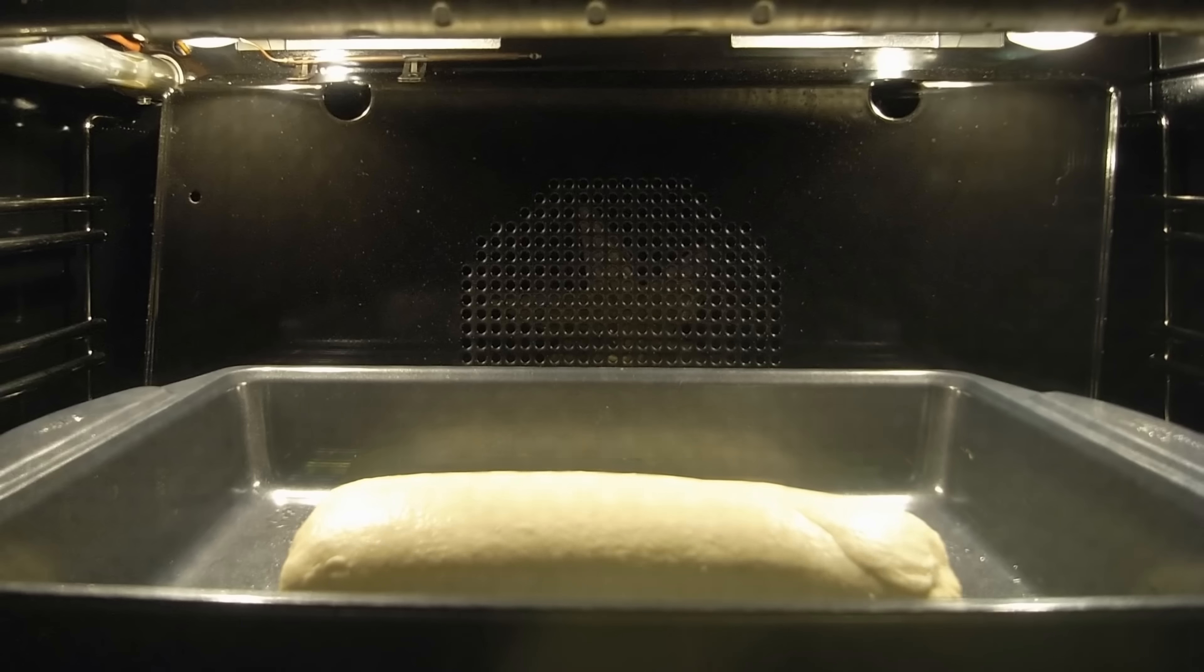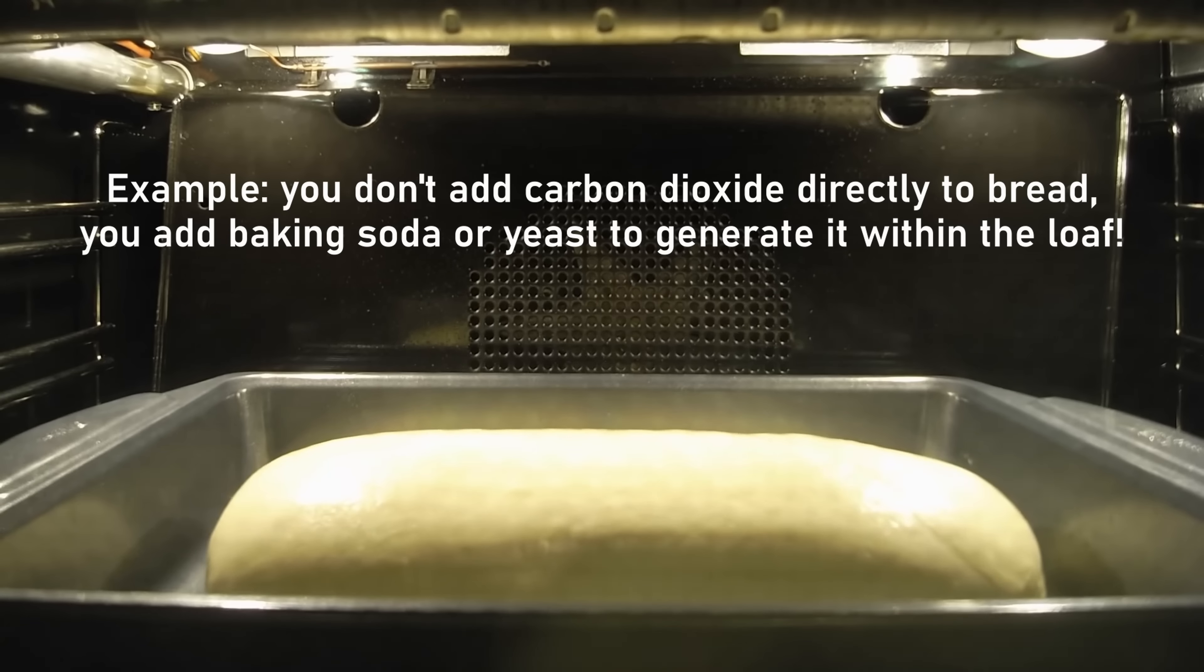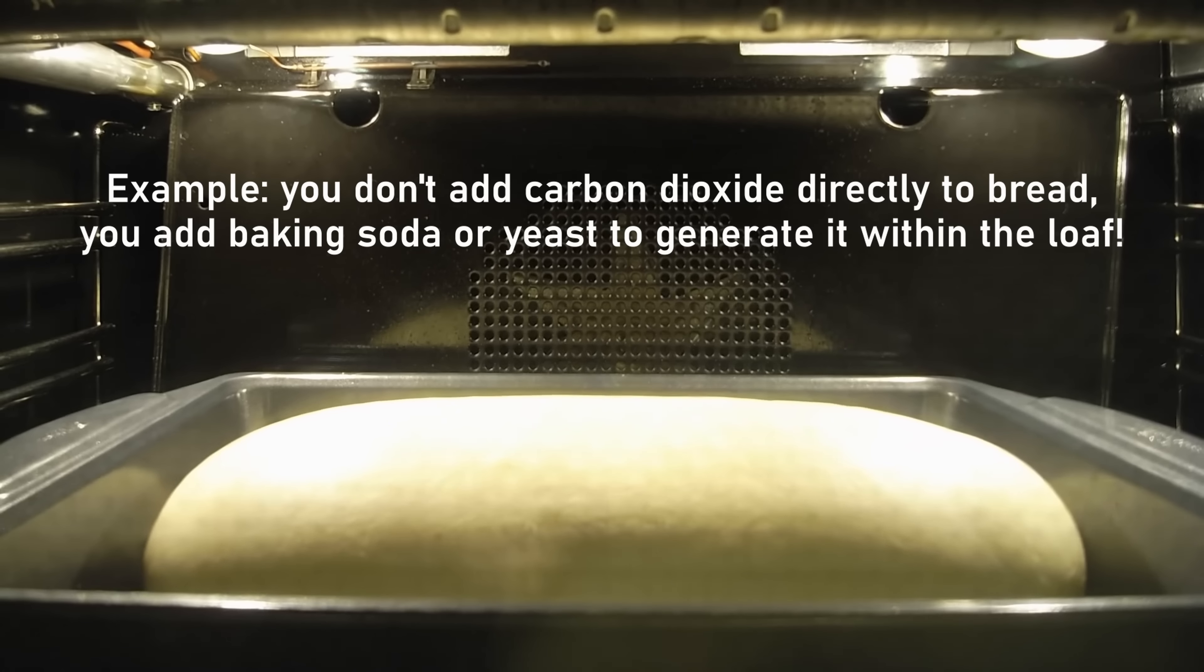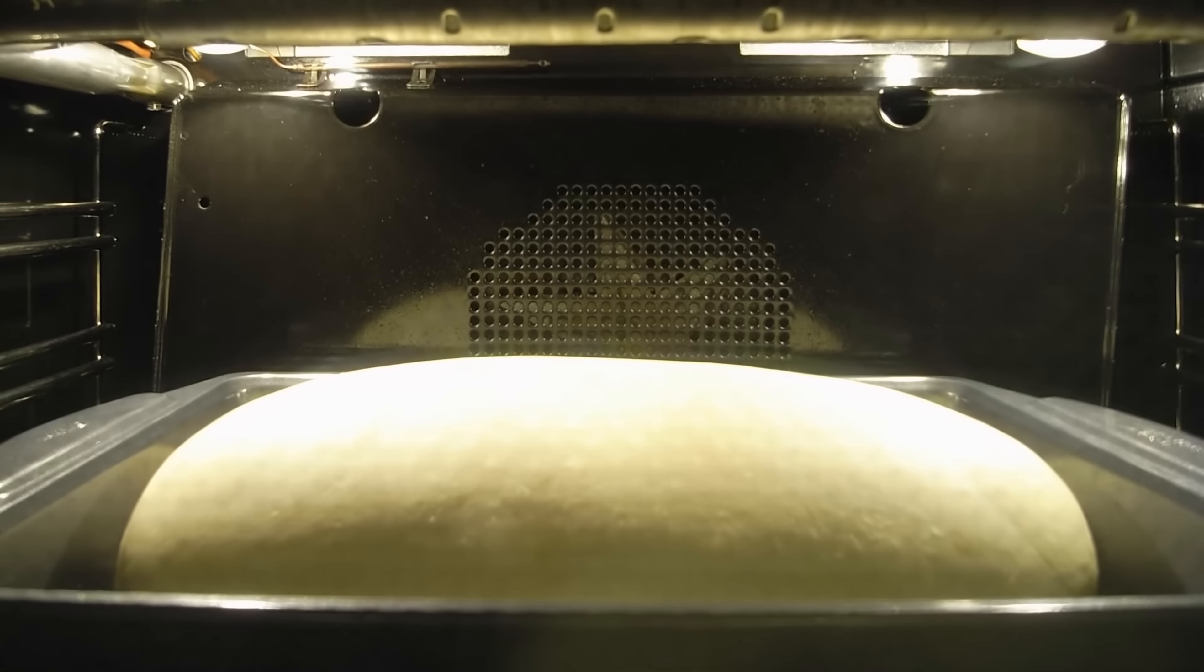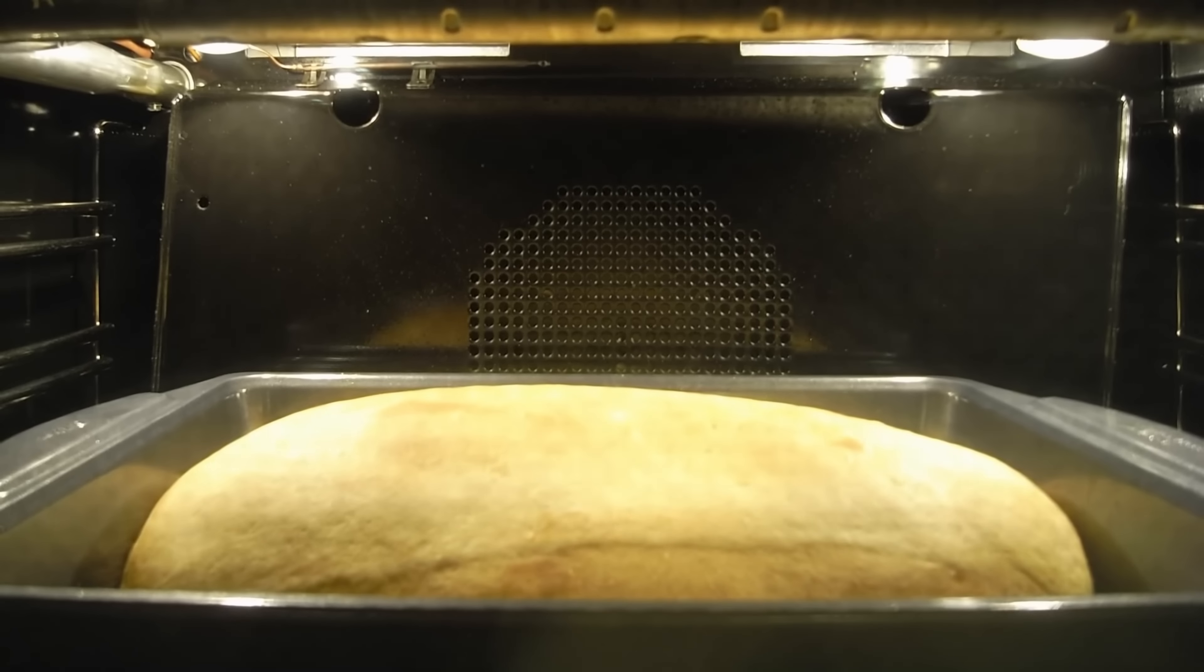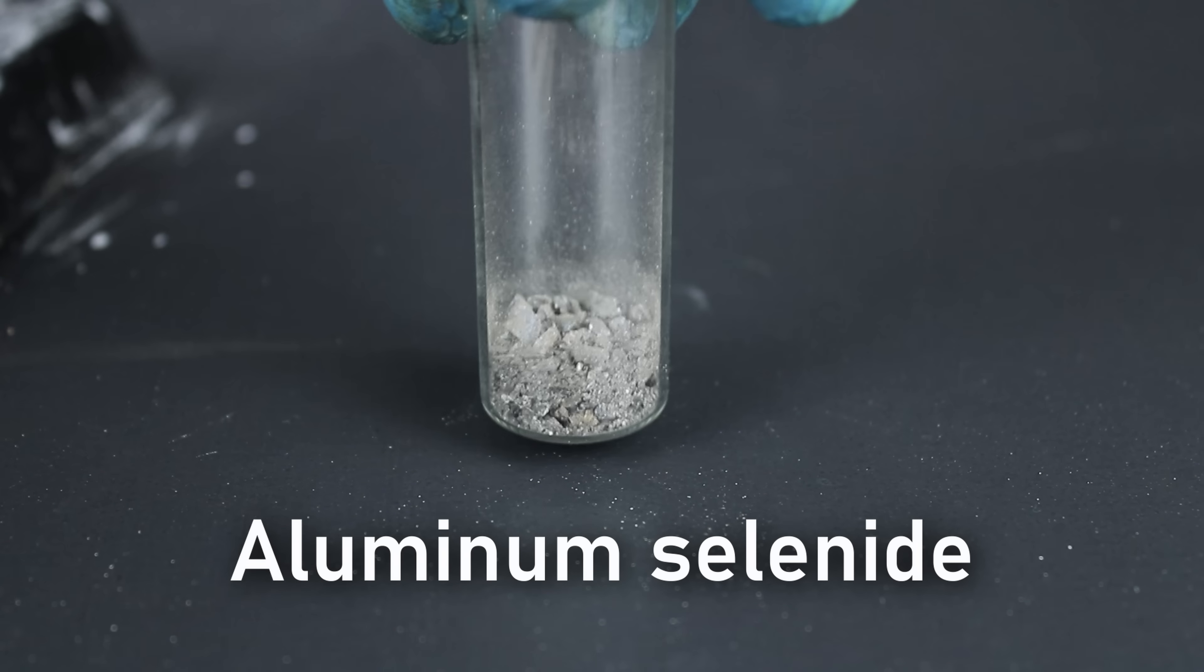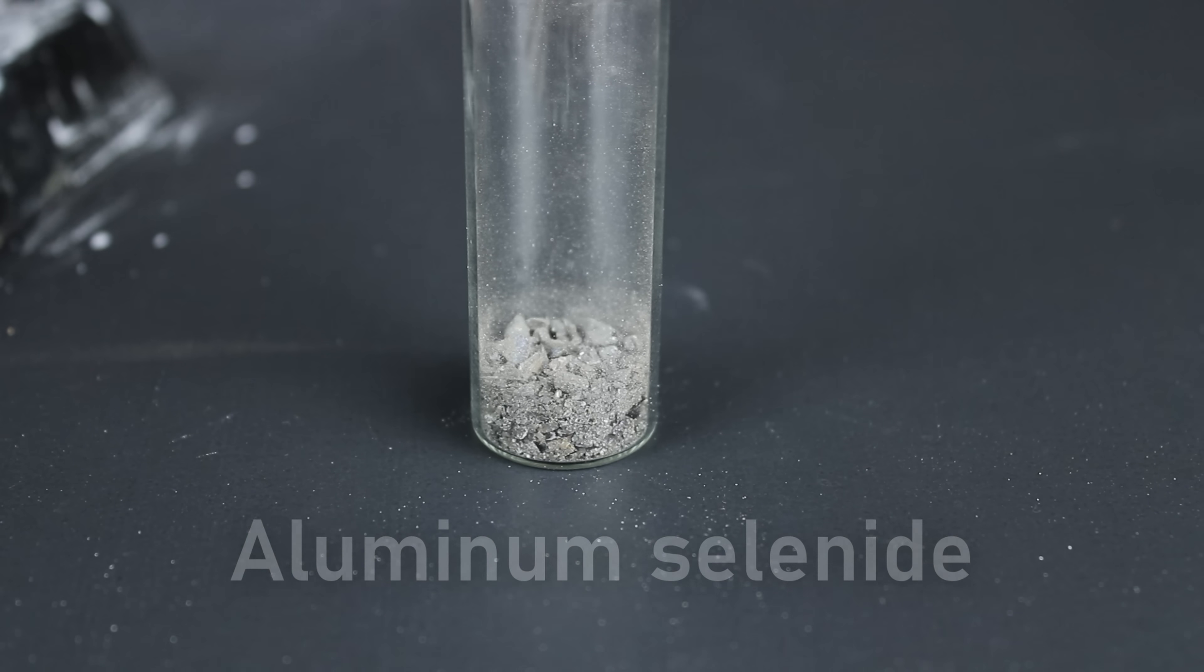So how did I get around the issue and make diselenoacetone? Two words, in situ. In situ is Latin for on-site, and in chemistry, it refers to the process of making a chemical for reaction within the reaction environment itself. In this case, we want to make the hydrogen selenide within the acetone solution, so very little has a chance to escape. And the reagent I chose to perform this task was something called aluminum selenide. This compound is fairly sensitive to water and acid, so mixing it with our solution should cause it to react and form hydrogen selenide at a fairly controlled speed.